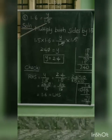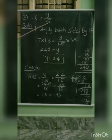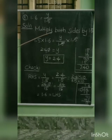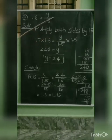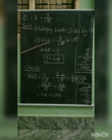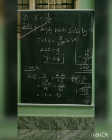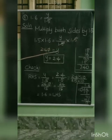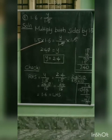So, y by 1.5 — to cancel the 1.5, multiply both sides by 1.5. On the right hand side, y by 1.5 into 1.5: the 1.5s cancel out, leaving just y. On the left hand side, we have 1.5 into 1.6. So, now we multiply these two decimal numbers.